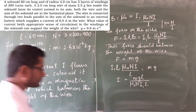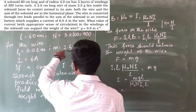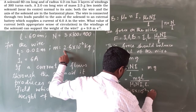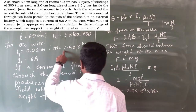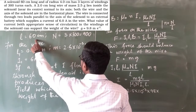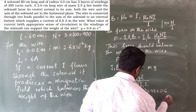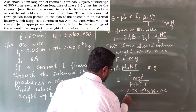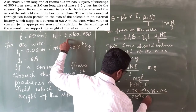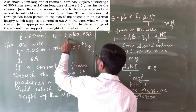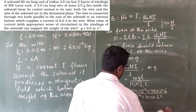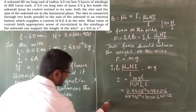Substituting the values: M is 2.5 × 10⁻³ kg, G is 9.8 m/s², L is 0.6 m. Divided by μ₀ which is 4π × 10⁻⁷, N is 900, I₁ is 6 ampere, and L₁ is 0.02 m. Calculating this gives a large current that must be supplied to the solenoid so that it can support the weight of the wire carrying 6 ampere.